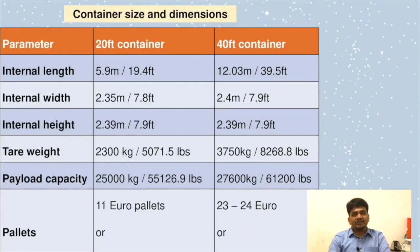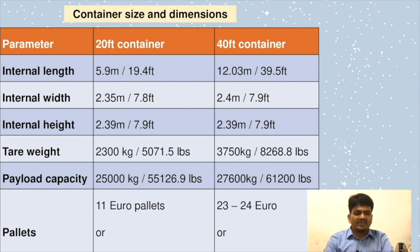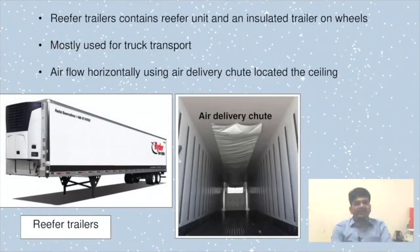Regarding container size and dimensions, the internal length could be 19.4 feet, and for a 40-foot container we can have 39.5 feet. Internal width is 7.8 feet, internal height is 7.9 feet. There are also specifications for tare weight, payload capacity, and pallets. These are certain container sizes which have different dimensions and design specifications listed here.